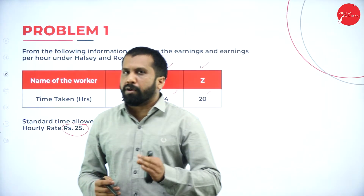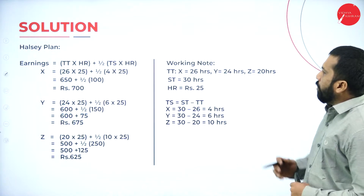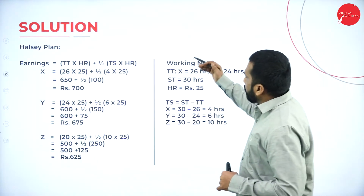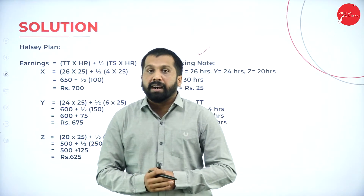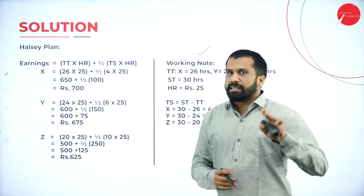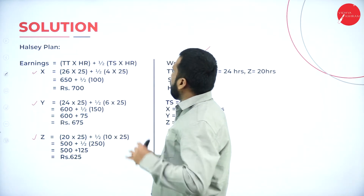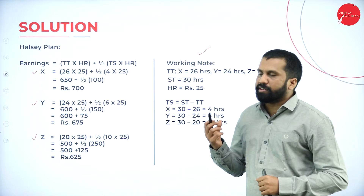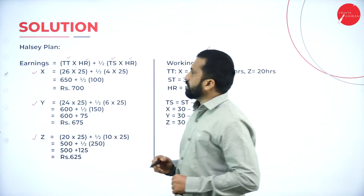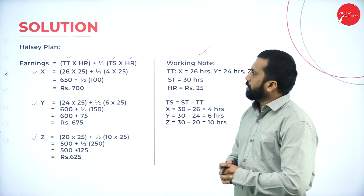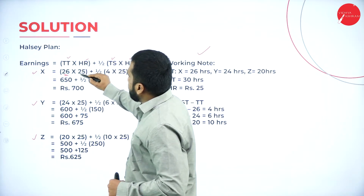In the previous session, I gave you the formula for Halsey as well as Rowan. Keep that formula — we will work out this problem. First, we will go for Halsey Plan. The formula is: time taken × hourly rate + ½ × time saved × hourly rate. For X, time taken is 26, hourly rate is 25. Time saved is 30 minus 26, which is 4 hours.